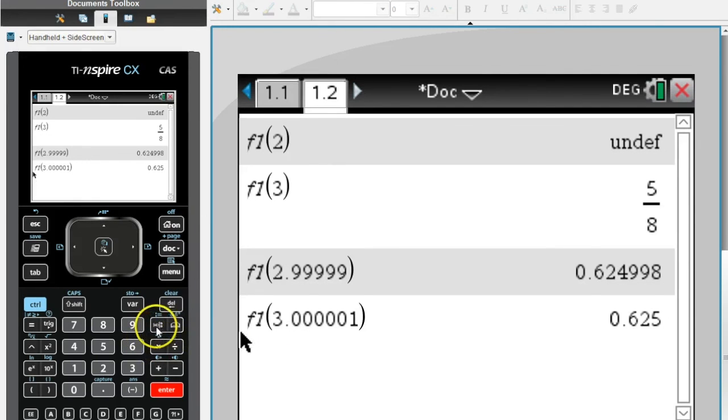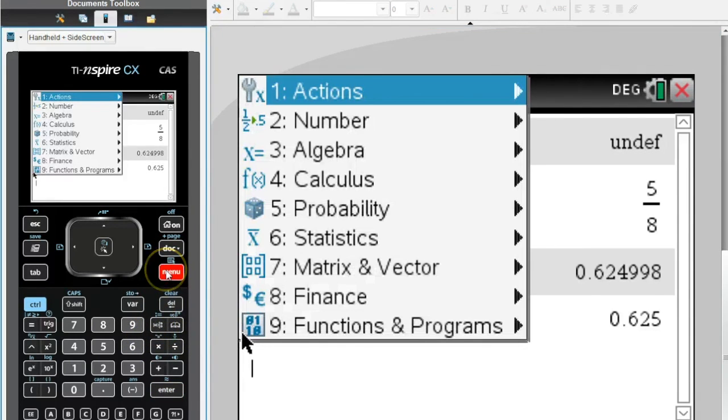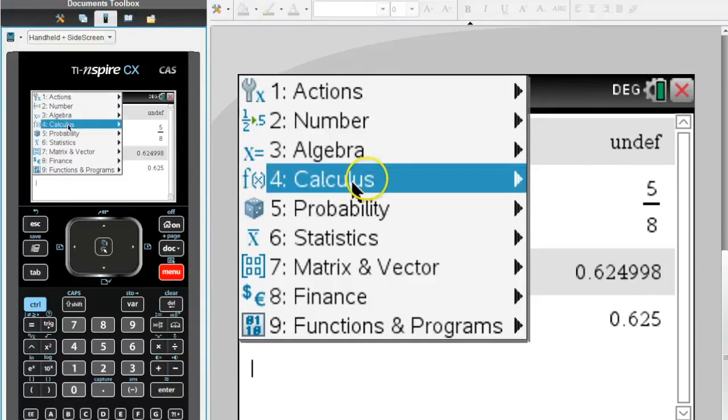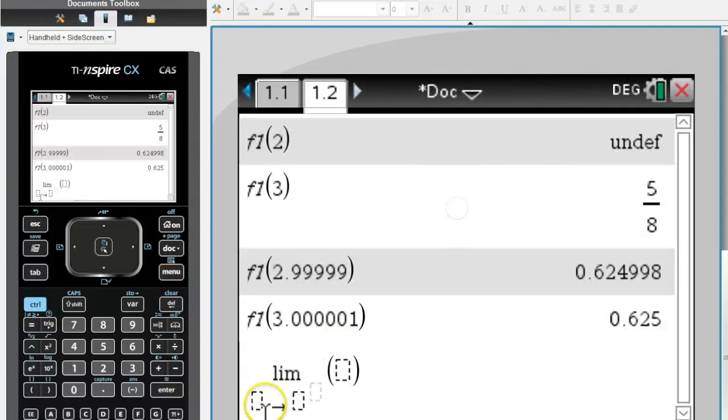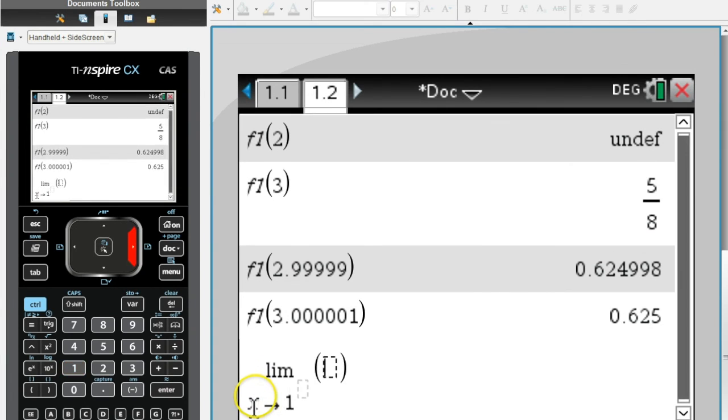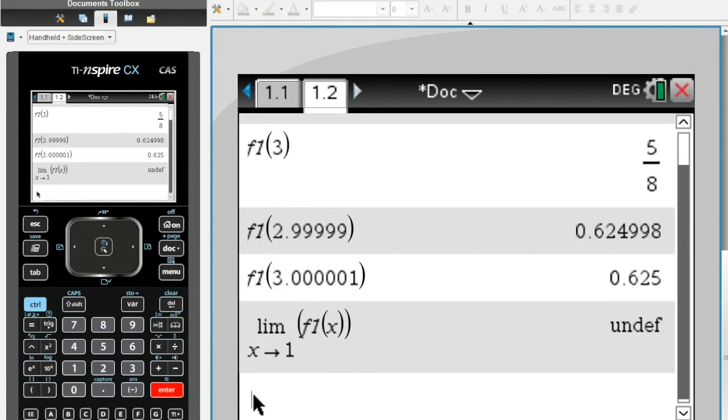That's how we do limits in the calculator. If we really wanted and we had a TI Inspire with the CAS version, if you go to Calculus here in your menu, you'll notice here's the limit. And this will let you just plug straight in as x approaches one of our first function that we had. And it'll tell us straight up that's undefined. So that'll do it that way too. That's how you do it in the calculator.